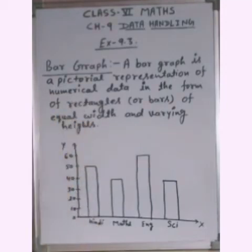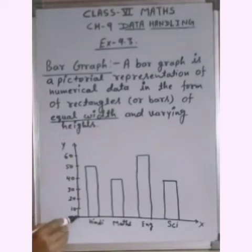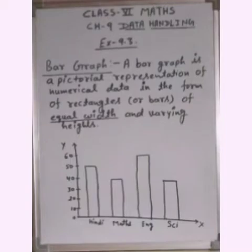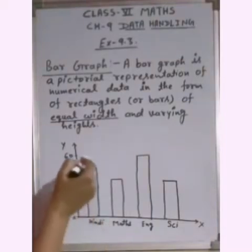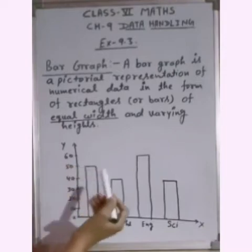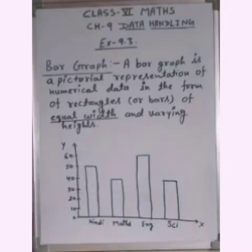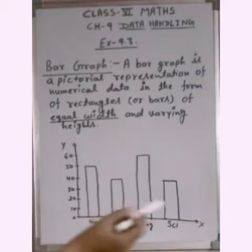The width of the bars is equal — for example, from 0 to 10, 10 to 20, the distance is 10 each, so the widths are equal. The height of the bars is varying, meaning different bars have different heights. So here we can see a bar graph example.